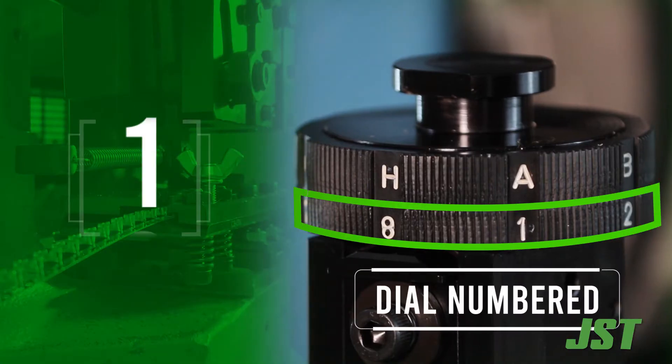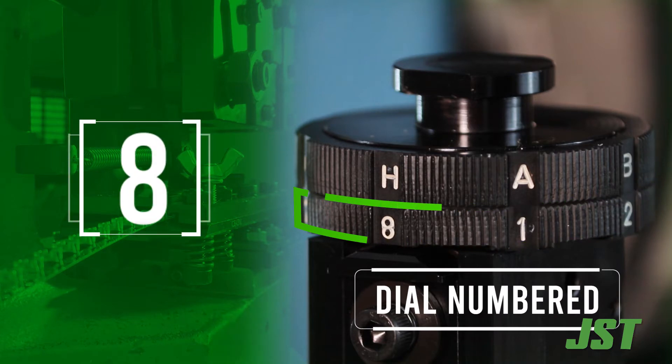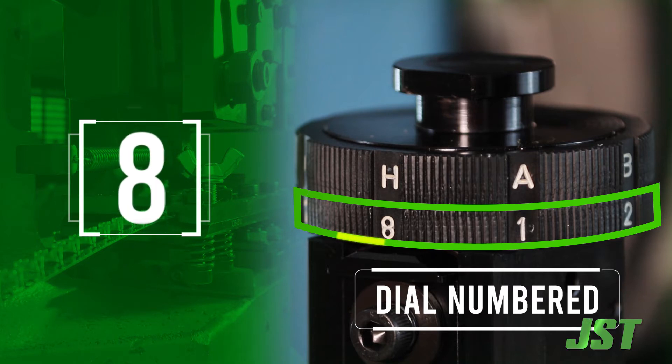The dial numbered from 1 to 8 is for adjusting the crimp height of the insulation. 8 is the highest setting and should always be the starting point.